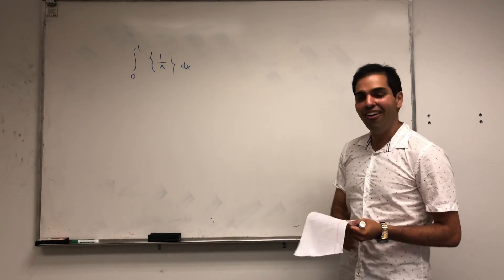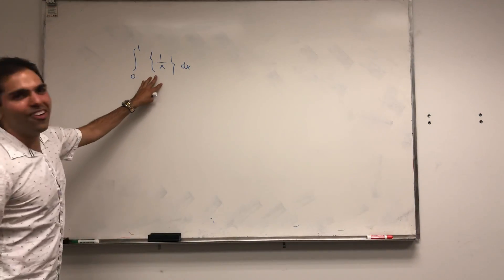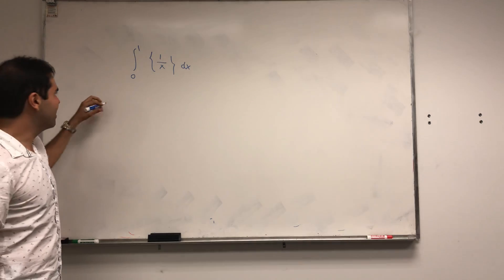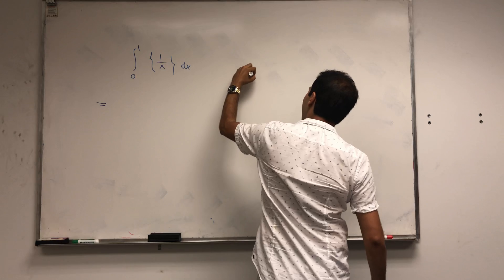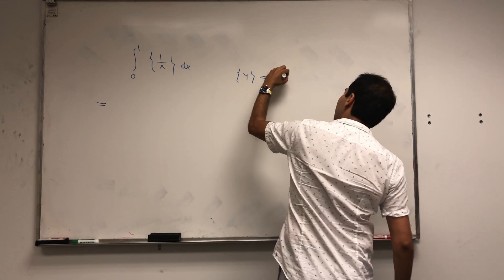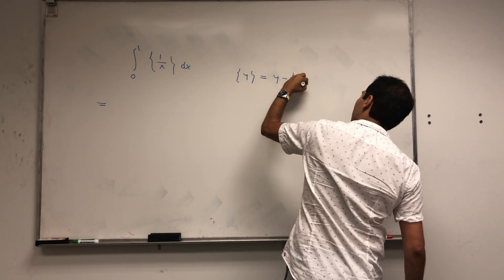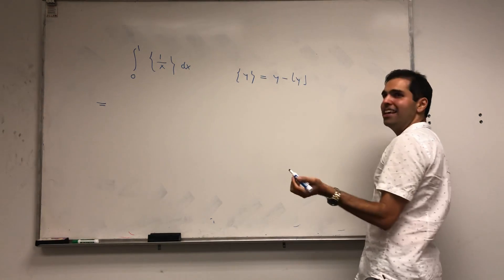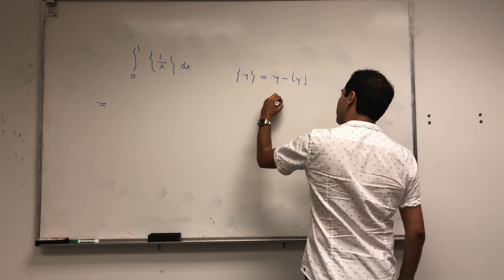But I'll leave it all the way to the end. So first of all, let's actually get rid of this fractional part. It turns out for every y, the fractional part of y is just y minus the integer part of y. Which makes sense, because suppose y is 2.333,